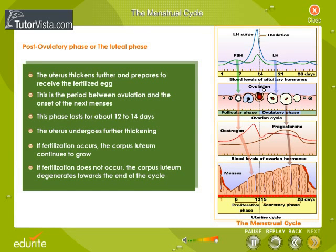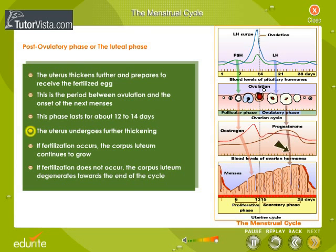Post-Ovulatory Phase, or the Luteal Phase. The uterus thickens further and prepares to receive the fertilized egg. This is the period between ovulation and the onset of the next menses, and it lasts for about 12 to 14 days. If fertilization occurs, the corpus luteum continues to grow. If fertilization does not occur, the corpus luteum degenerates towards the end of the cycle.